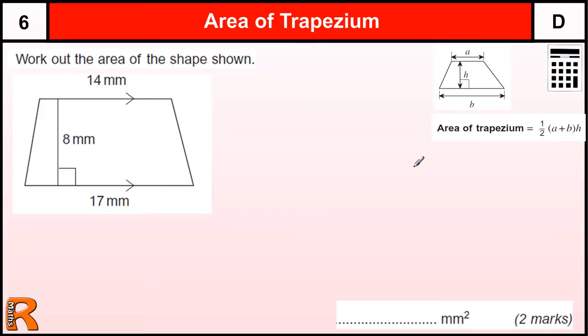So using that, area of trapezium is a half A plus B H, where A and B are the parallel sides, so that's 14 and 17. So we've got a half of 14 plus 17, and then we're timesing by the H, which is the distance between them.